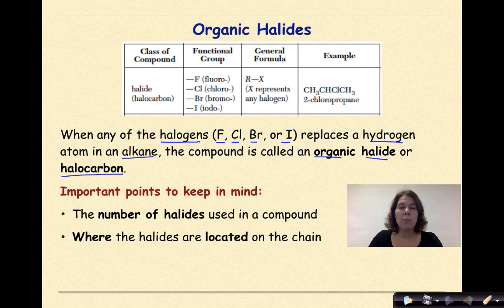Important things to keep in mind: The number of halides used in the compound and where the halides are located on the chain. So again, this is referring to part of your regions reference table, specifically table R. Notice that it gives you the class of compound. We refer to these as either halides or halocarbons. The other really important thing to notice is that they give you the functional group, specifically fluoro, chloro, bromo, or iodo. Notice that they give you the spelling here. That's really important. So if you're not sure how to spell these, please go to reference table R.